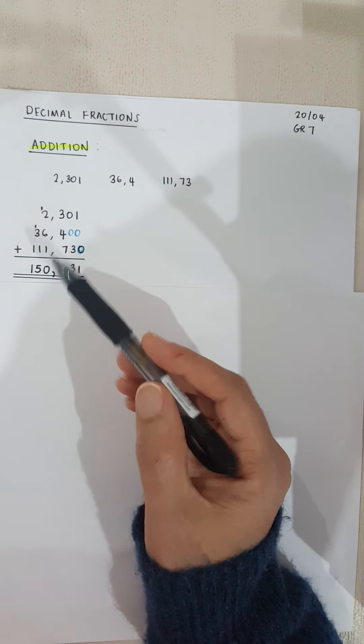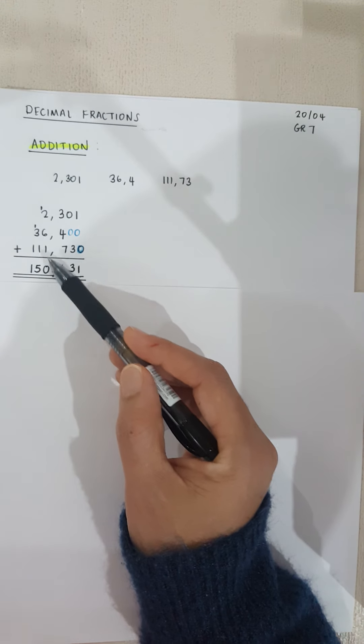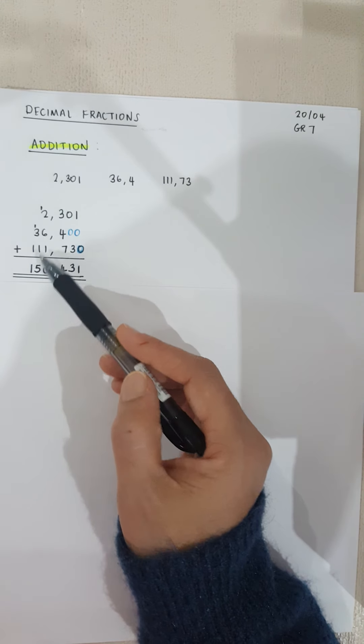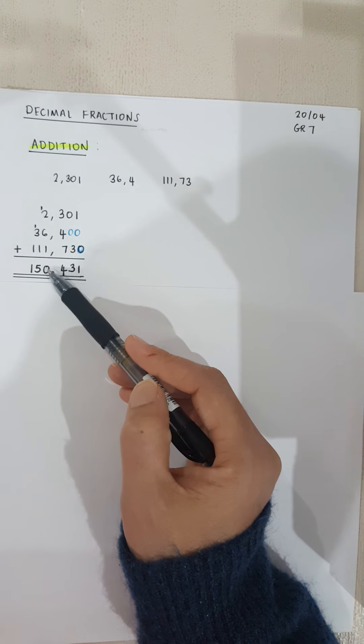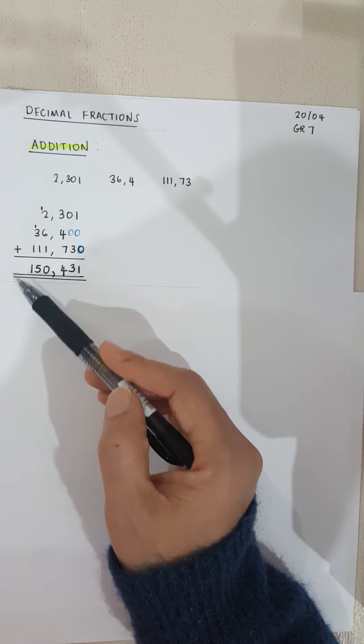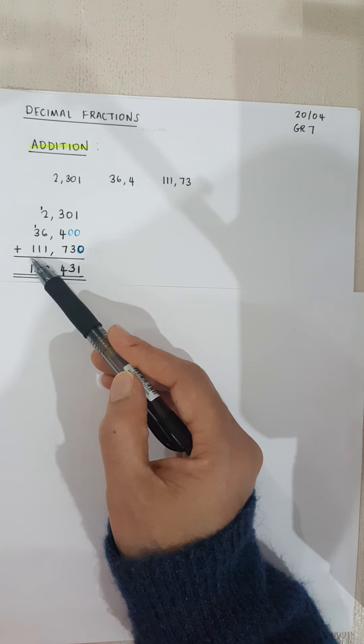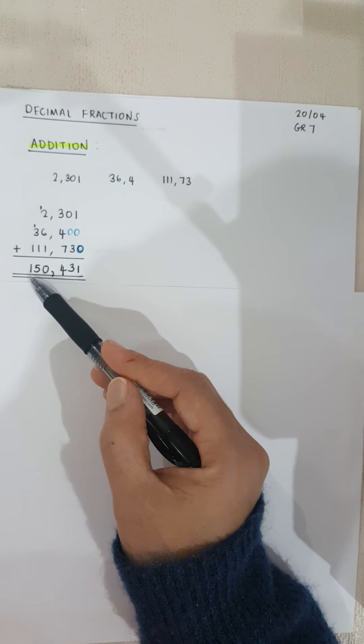I put the comma down in line with that column where the comma is. Two plus one is three, plus six becomes nine, plus one becomes ten. So I put my zero down there, I've carried my one on the top. Three plus one is four, plus another one is five, and we bring down the one.